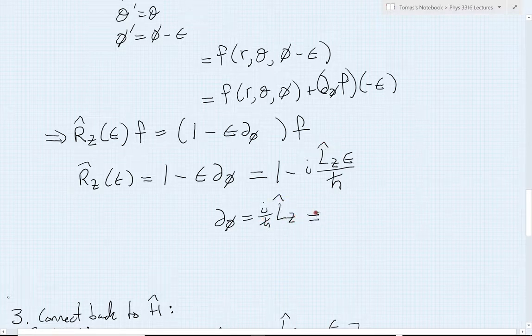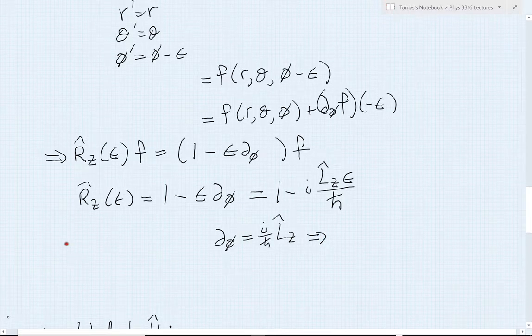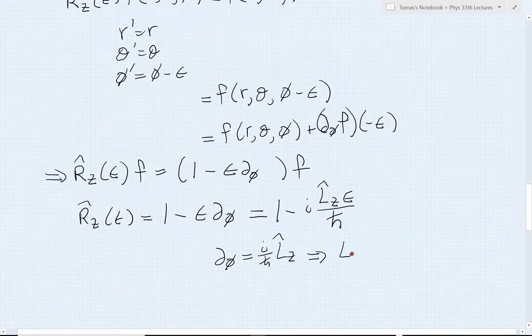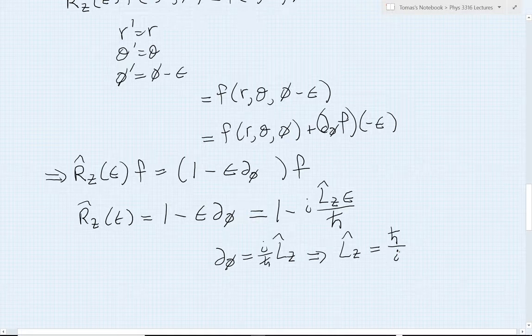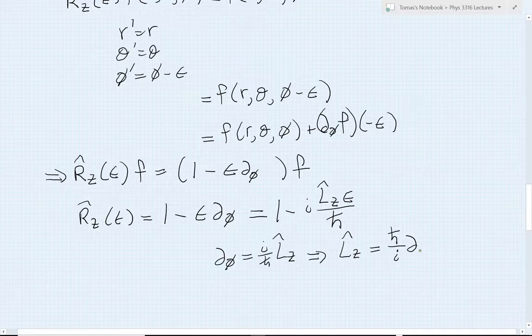So I've learned now an alternate expression for my Lz operator, that Lz written in spherical coordinates is just h bar divided by i. So it feels a lot like the momentum operator that we're used to. But now the derivative is with respect to an angular coordinate because it's actually angular momentum.